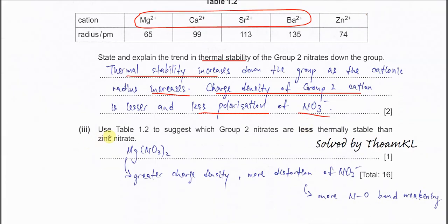Part three: use table 1.2 to suggest which group 2 nitrate is less thermally stable than zinc nitrate. Obviously it's magnesium nitrate, because magnesium ion radius is smaller than zinc (65 pm vs 74 pm). The magnesium ion has greater charge density, more polarizing power, and can distort the nitrate easier. Therefore, the N-O bond will get weakened easily. The answer is magnesium nitrate.